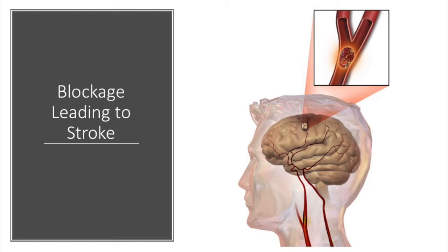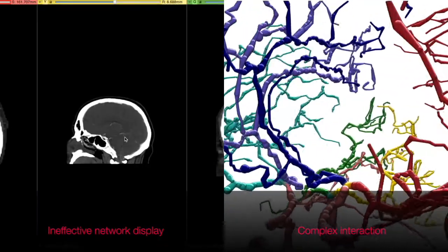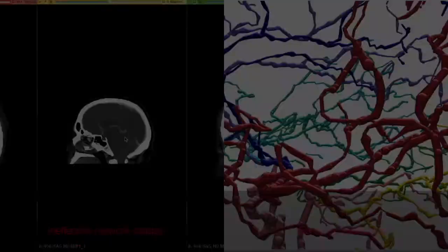A blockage in the cerebral network of blood flow leads to a stroke. Existing methods fail to visualize this network.